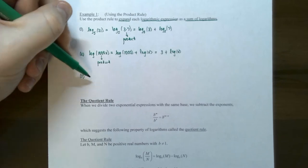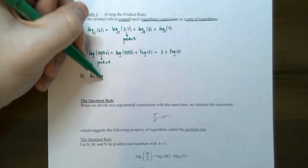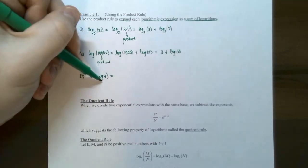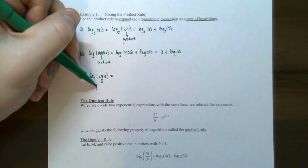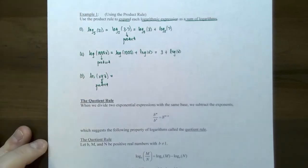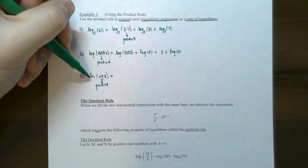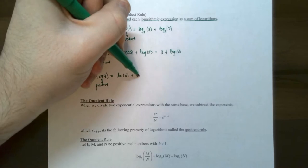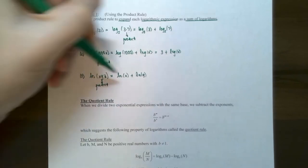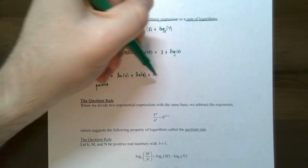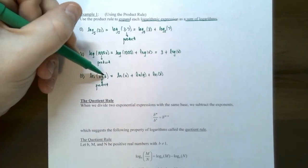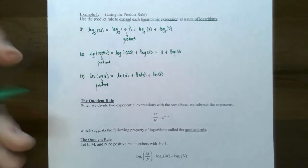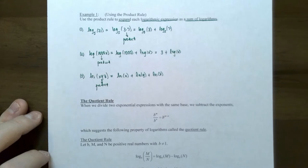One more: natural log of x times y times z. Notice it's a product inside the logarithm, and it's natural log, which is log base e. So natural log of x plus natural log of y plus natural log of z — a sum of three separate logarithms. Each of these involves a variable, so they cannot be simplified any further. This gives you an idea of how to use the product rule — make sure you have a product as the argument.